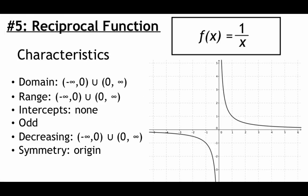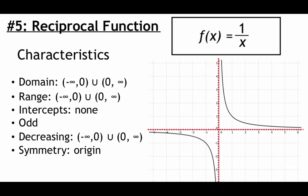Number 5 is a reciprocal function, f of x equals 1 over x. Since x is in the denominator, we can't plug in zero, so the domain runs from negative infinity to 0, not included, union 0 to infinity, not included. The range is similar — we won't get zero as an answer. There are no x or y intercepts. There are asymptotes running along the x-axis and y-axis which prevent the graph from crossing either. It's an odd function with origin symmetry, decreasing on negative infinity to 0 and on 0 to infinity.